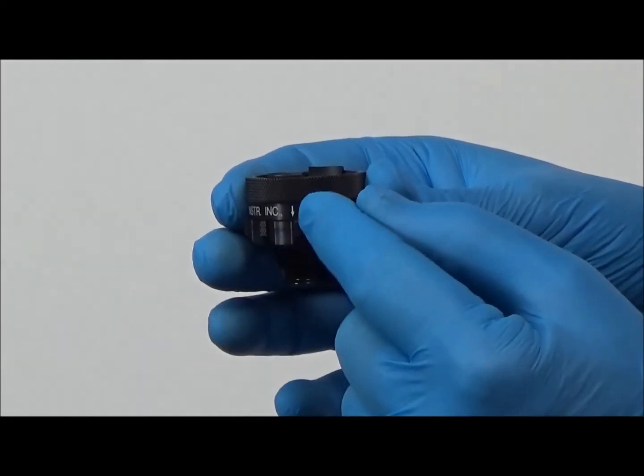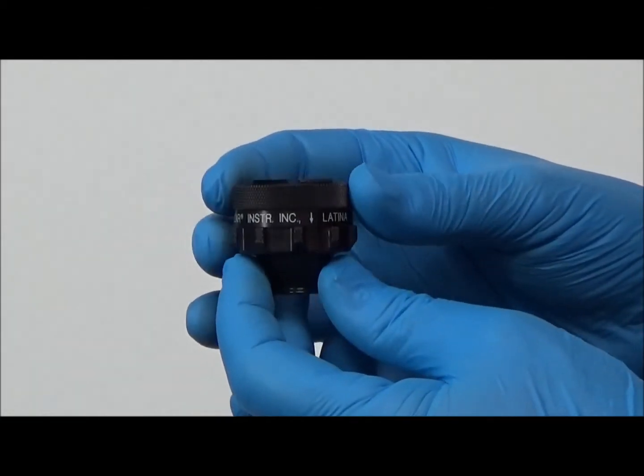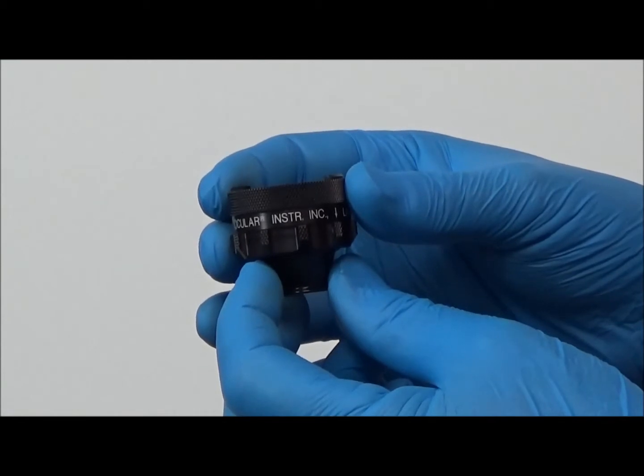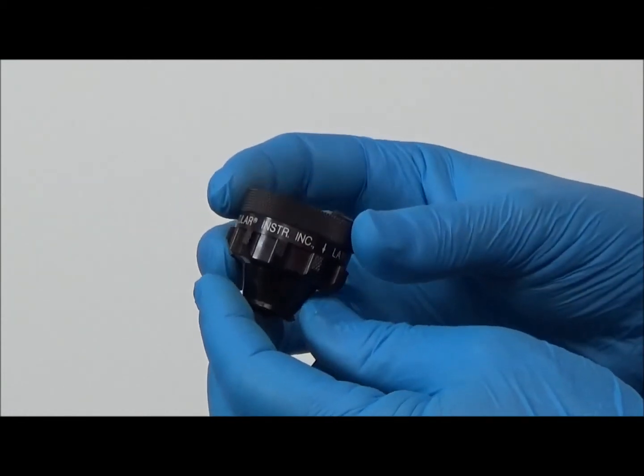For lenses with internal reference bar figures, such as the Latina 5-bar lens shown here, a specific angular rotation of the lens is required.